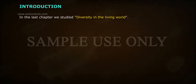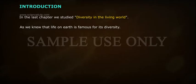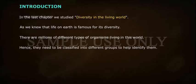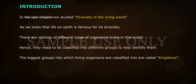In the last chapter we studied diversity in the living world. Life on earth is famous for its diversity — there are millions of different types of organisms living in this world. Hence they need to be classified into different groups to help identify them. The biggest groups into which living organisms are classified are called kingdoms.